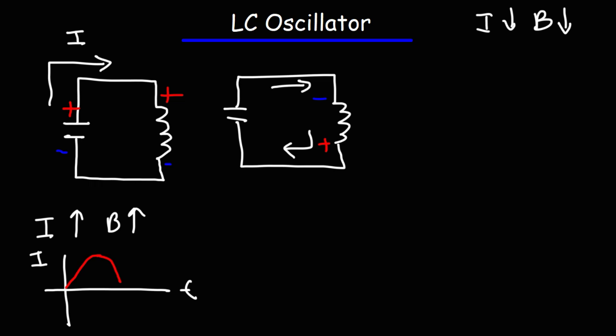As the inductor releases its stored energy, the capacitor is absorbing that energy. So the capacitor is being charged at this point. And any time the current decreases, the magnetic field collapses, and it does so in such a way that the inductor tries to maintain the decrease in current. And that's why the polarity reverses.